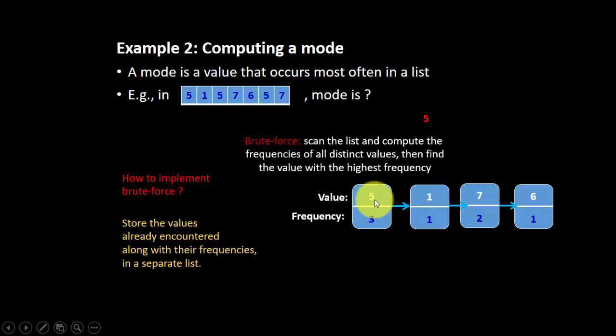For example, we have the first element, 5, and then we scan it, and then we will count how many times 5 appear, and we store it in the frequency list. And then we look at the second element. Again, we scan to the rest of it to find if there is any recurrence.